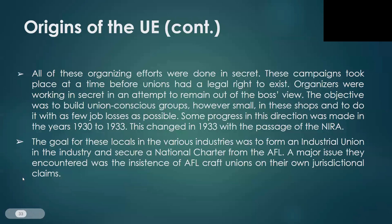Organizers were working in secret in an attempt to remain out of the boss's view. The objective was to build union-conscious groups, however small, in these shops, and to do it with as few job losses as possible. Some progress was made in the years 1930–1933. This changed in 1933 with the passage of the NIRA, which we discussed earlier. The goal for these locals was to form an industrial union in the industry and to secure a national charter from the AFL. A major issue they encountered was the insistence of AFL craft unions on their own jurisdictional claims.